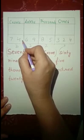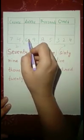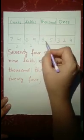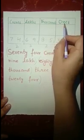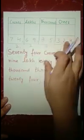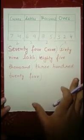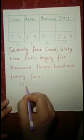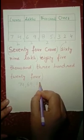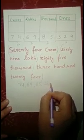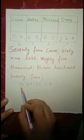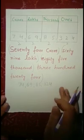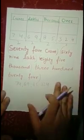We can put commas to separate the periods. After 74 crore, put a comma to separate crores and lakhs. After 69 lakhs, put a comma to separate lakhs from thousands. After 85, put a comma to separate thousands from ones. So the number is written as 74,69,85,324.